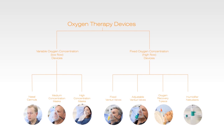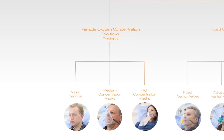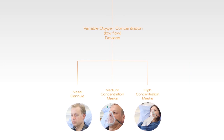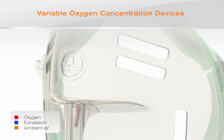The devices for delivery of oxygen can be divided into two groups depending on whether they deliver a proportion or all of the patient's ventilatory requirement. Variable oxygen concentration devices, also known as low flow devices, deliver oxygen at flows lower than the patient's respiratory requirements, so additional room air is also breathed in.